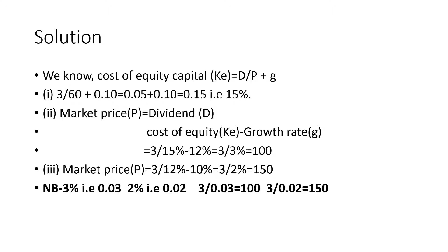In order to find the market price, we rearrange the formula. Market price P equals dividend D, divided by (cost of equity KE minus growth rate G). So: $3 divided by (15% minus growth rate of 12%), equals $3 divided by 3%, giving a market price of $100. Again, market price P equals $3 divided by (12% minus 10%), equals $3 divided by 2%, giving a market price of $150.